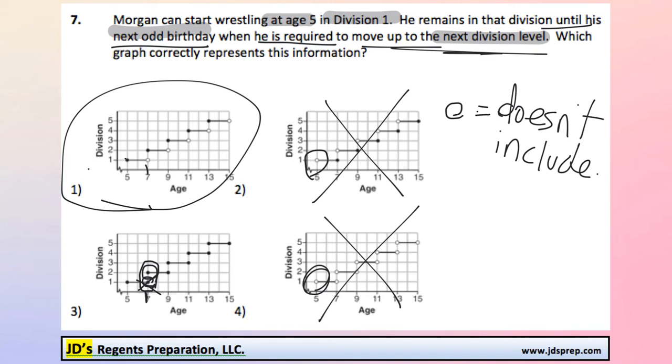Once he turns 7, it becomes an open circle, meaning it doesn't include that point. When he's 7, he can't be in division 1 anymore. He has to move up to the next division. And we see that happening each time he has his next odd birthday.